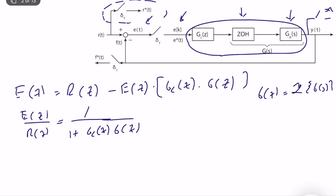From this perspective, to minimize error we want the denominator term to be as large as possible — ideally infinity. We call G_c(z)·G(z) the open-loop transfer function G_OL(z), so the error becomes E(z) = R(z)·1/(1 + G_OL(z)).